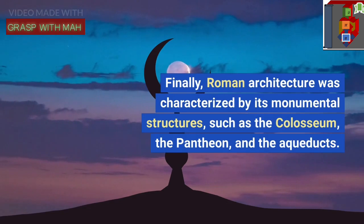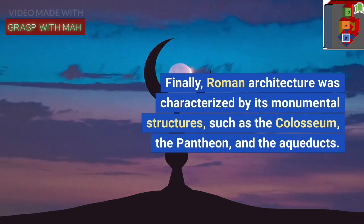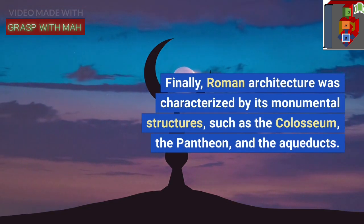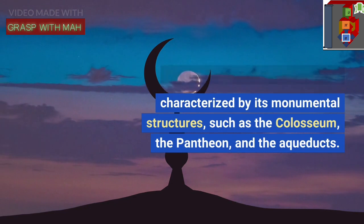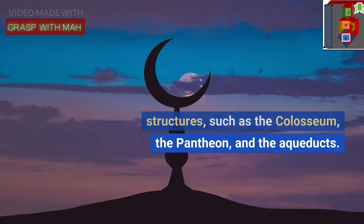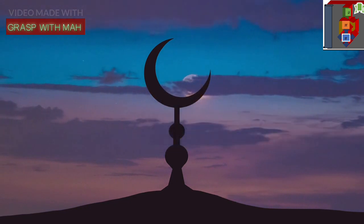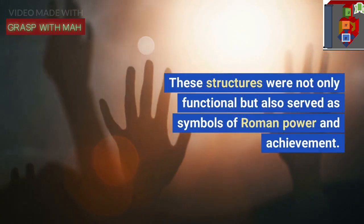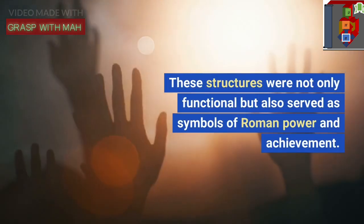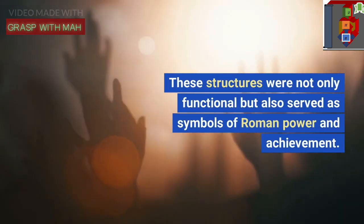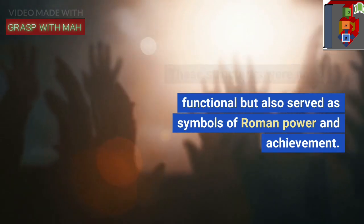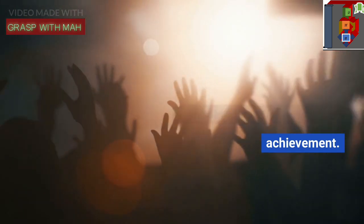Finally, Roman architecture was characterized by its monumental structures, such as the Colosseum, the Pantheon, and the Aqueducts. These structures were not only functional but also served as symbols of Roman power and achievement.